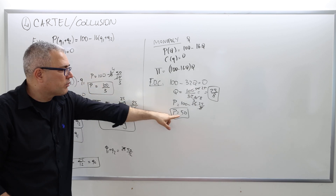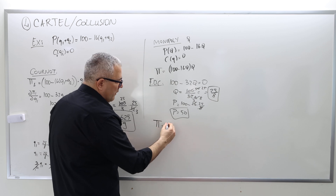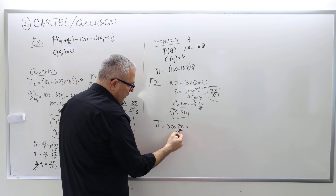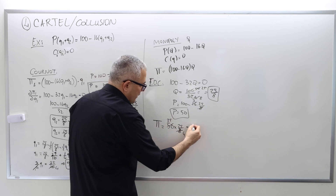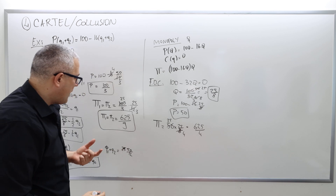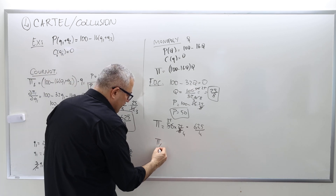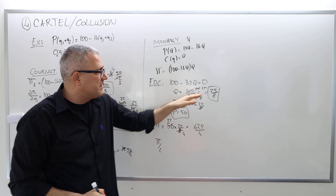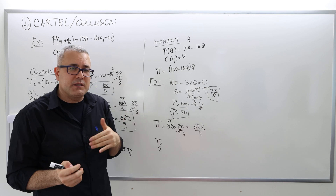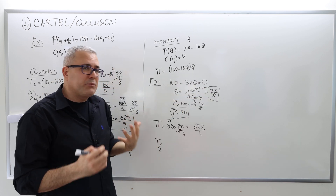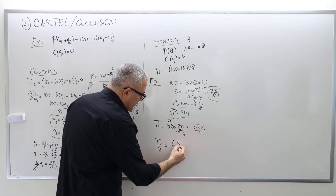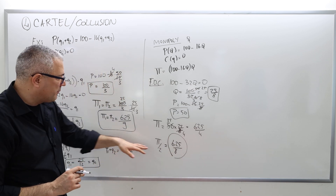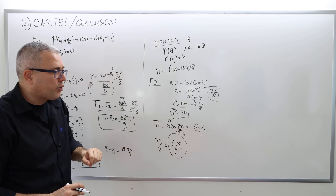The total monopoly profit is 50 times 25/8, giving 125/4 as total profit. They split the quantity: each produces 25/16. They also split the profit, so each firm earns 625/8 under collusion.